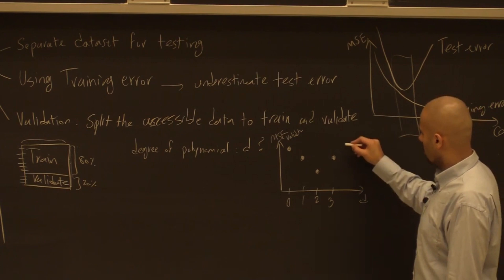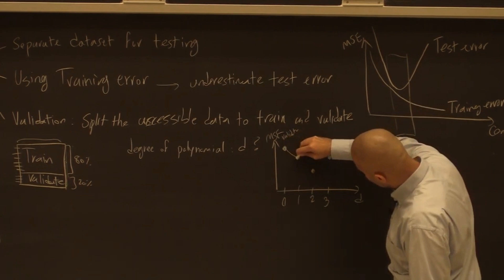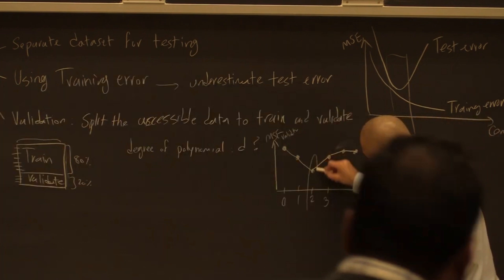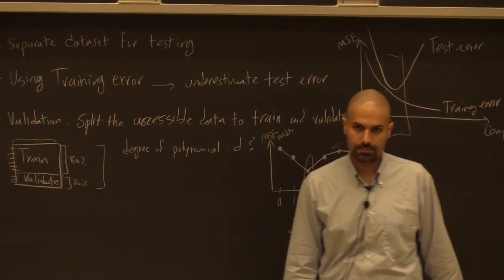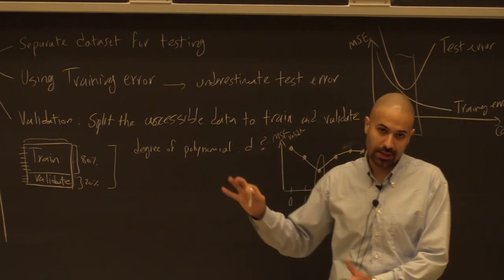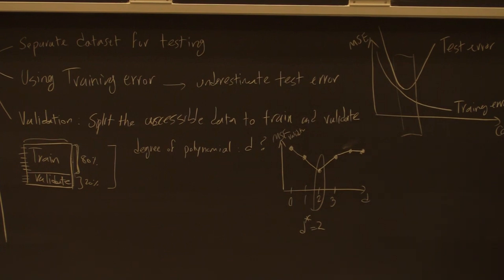From this pattern we decide the suitable value of the hyperparameter — say d-star equals two. Now that d-star is chosen, we go back and train a new model on all of the accessible data. The reason is that we want the model to have sufficient data. The model trained on 80% was not the best we could get, since all the data is accessible for both training and validation.